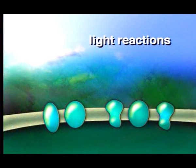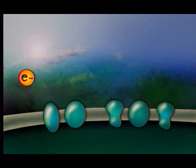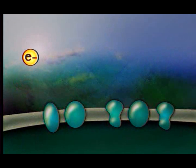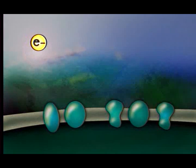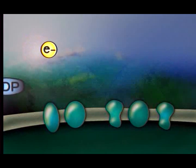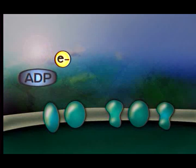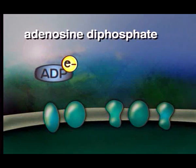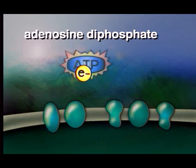The light reactions occur first. When light hits chlorophyll molecules, it excites electrons in these molecules and raises them to a higher energy level. The electrons are then involved in a series of reactions in which they give up energy. These reactions set up conditions that cause molecules of adenosine diphosphate, or ADP, to be converted into higher energy molecules.